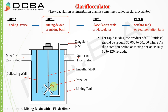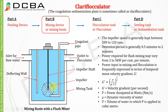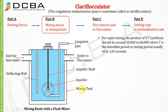The units of velocity gradient G' are per second (s⁻¹). If you multiply G' by time t, you get a dimensionless quantity. For rapid mixing, the product G' × t should be around 30,000 to 60,000.